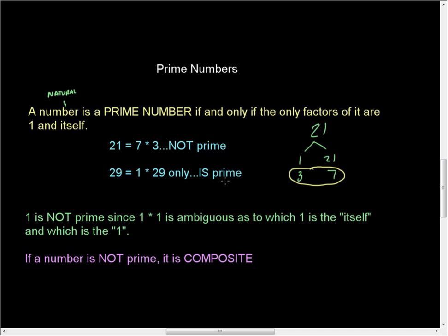You could take it both ways. Either one could be the role of the quote itself. Since you don't know which one, and math despises ambiguities, we say fine, we'll just ignore it. That 1 is not a prime number.